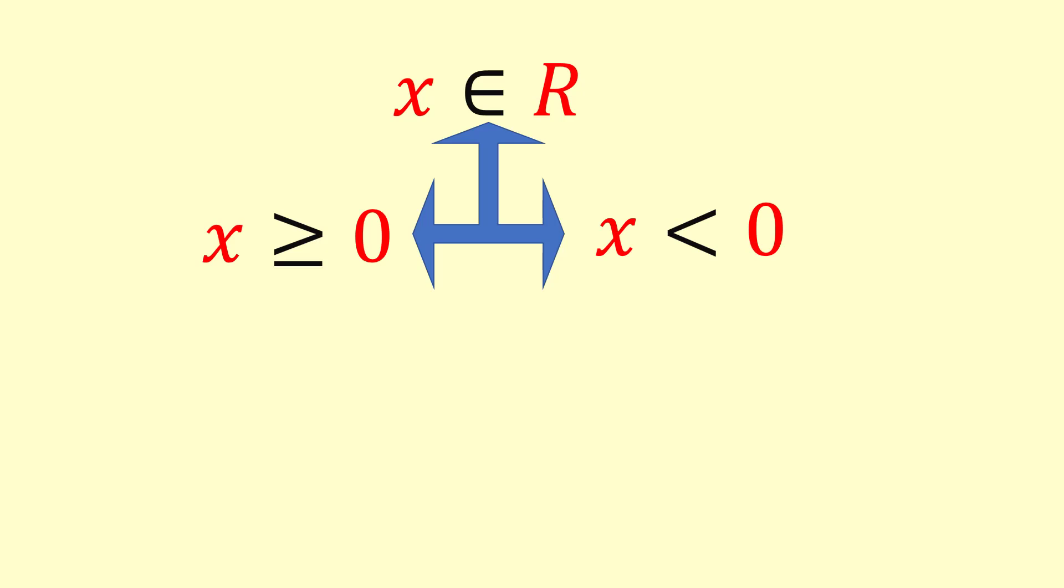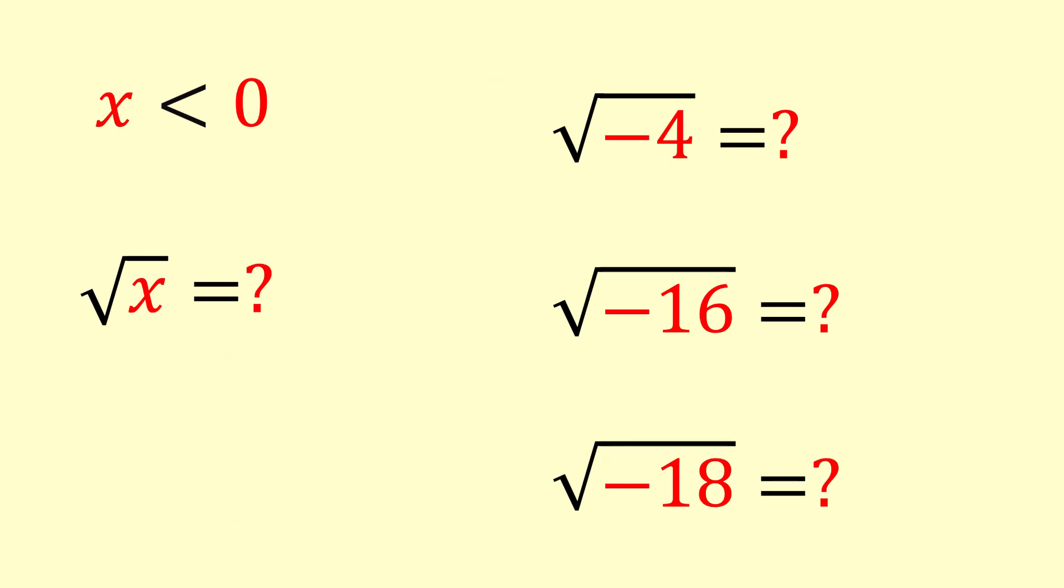If x is non-negative, then we can easily find a square root by using our previous knowledge. Like positive square root of 4 and 16 are 2 and 4 respectively. But we cannot find a square root of negative numbers as we did earlier.